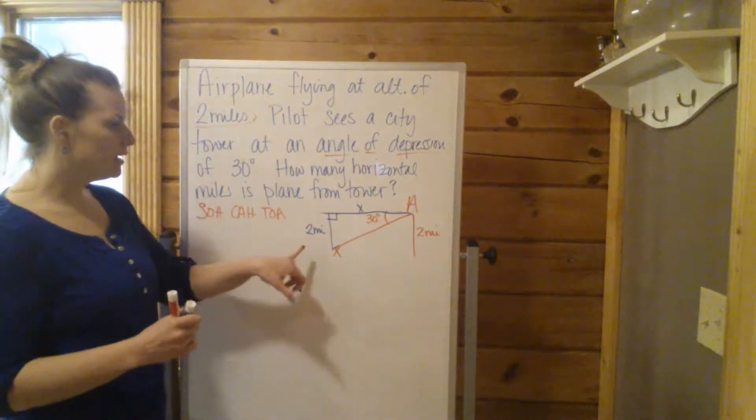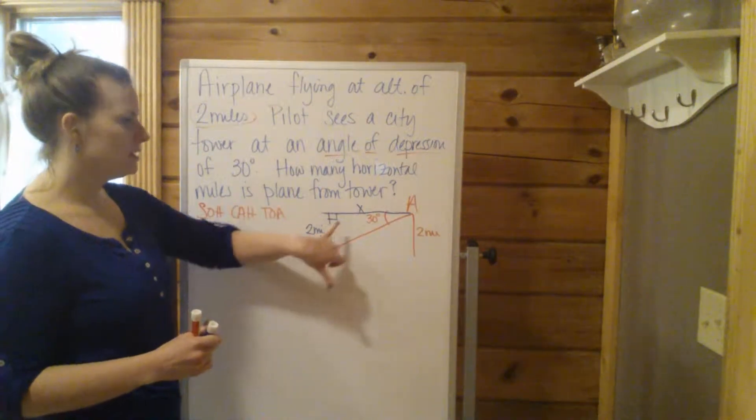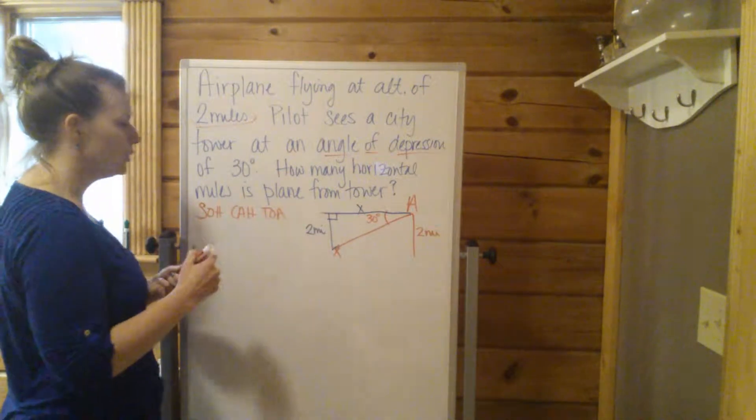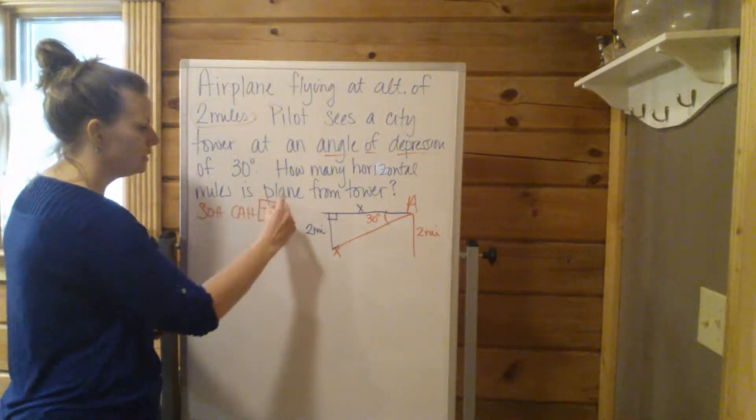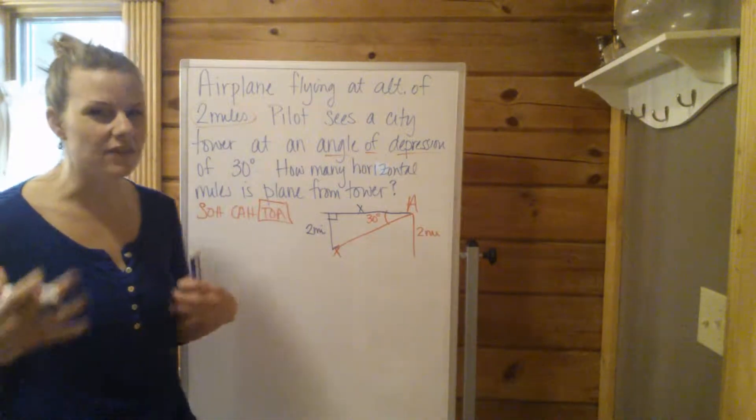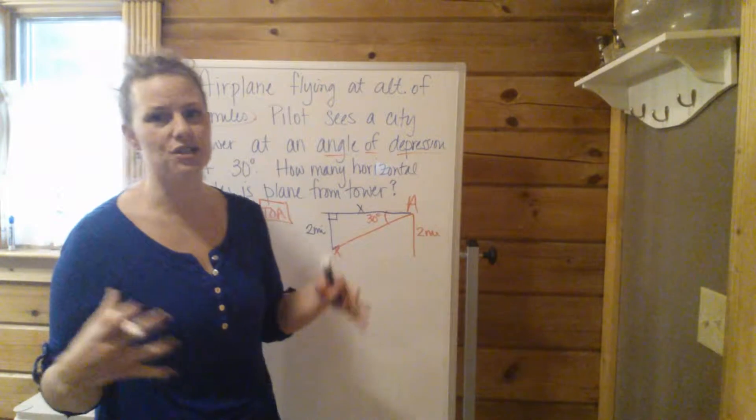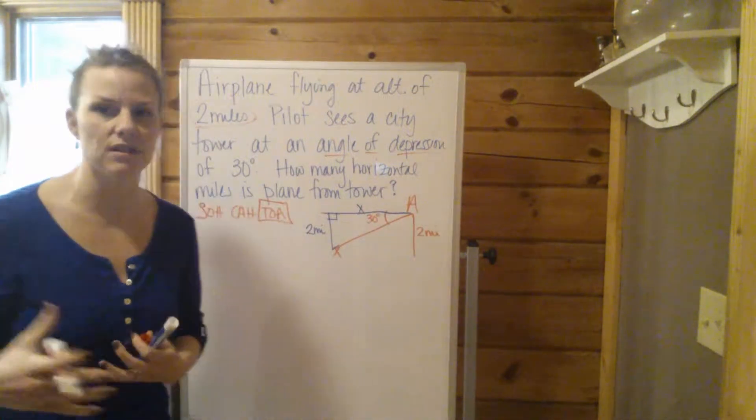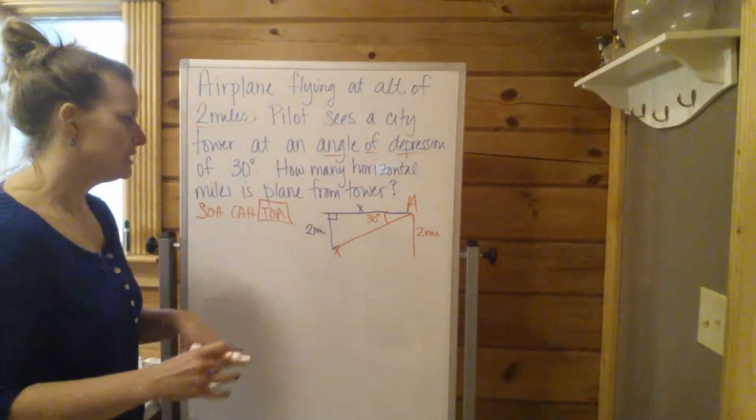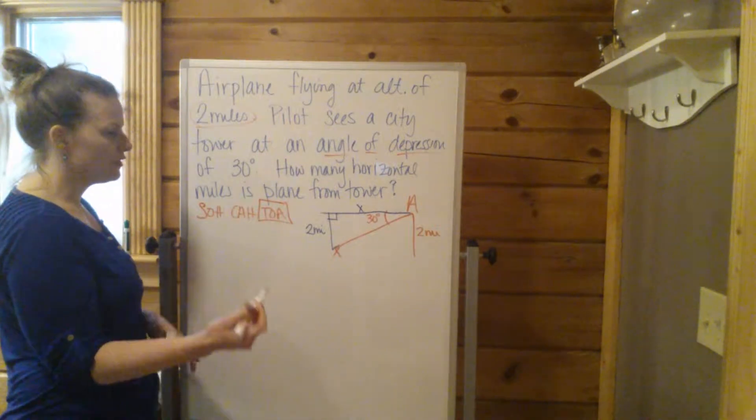The two sides we care about here are the opposite and the adjacent. Opposite and adjacent, which would be TOA or tangent. You'll see a lot of your tangent problems in the story problems in real life applications. Not always, there's going to be some sines and cosines, but a lot of times you're going to see opposite and adjacent sides.